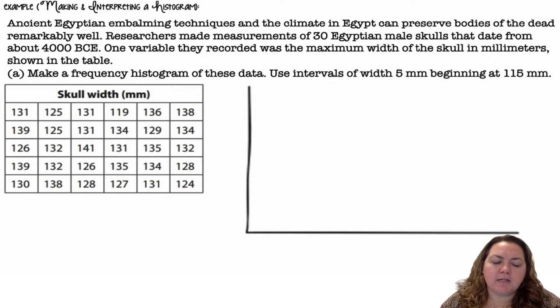Making and interpreting a histogram. Ancient Egyptian embalming techniques and the climate in Egypt can preserve bodies of the dead remarkably well. Researchers made measurements of 30 Egyptian male skulls that date from about 4000 BCE. One variable they recorded was the maximum width of the skull in millimeters shown in the table. Make a frequency histogram of these data. Use intervals of width 5 millimeters beginning at 115.